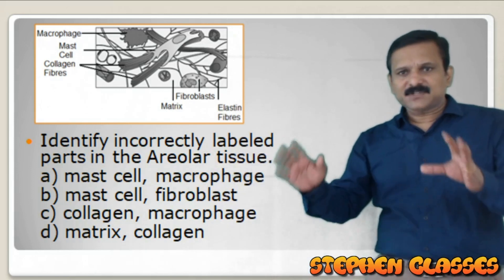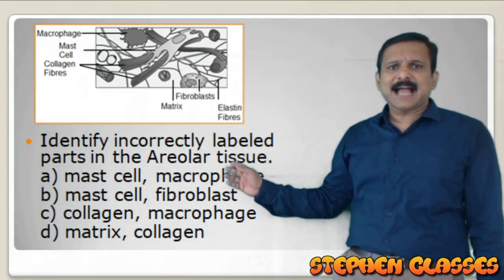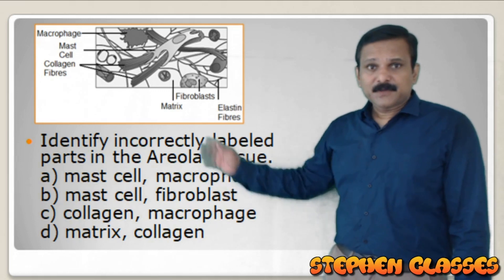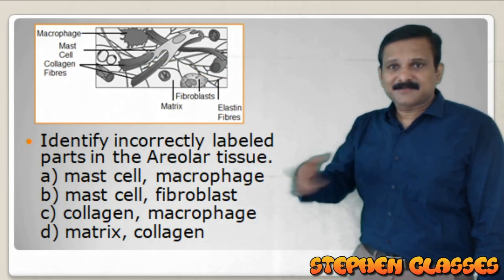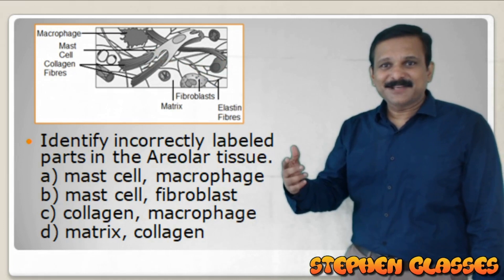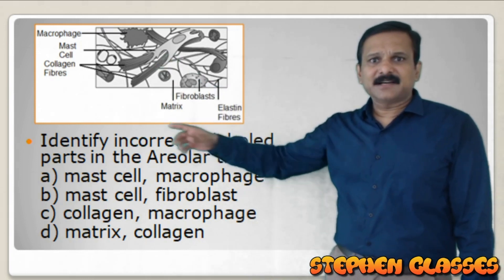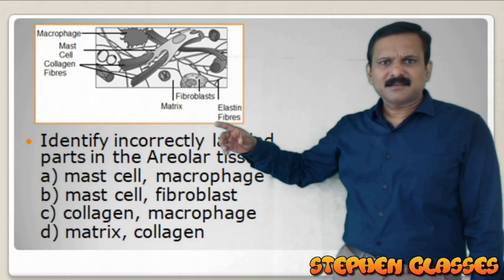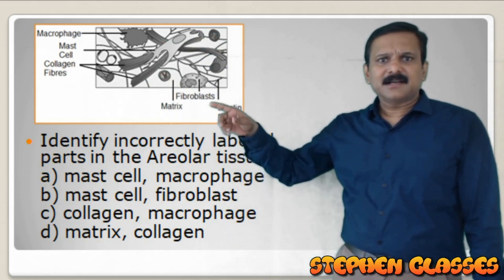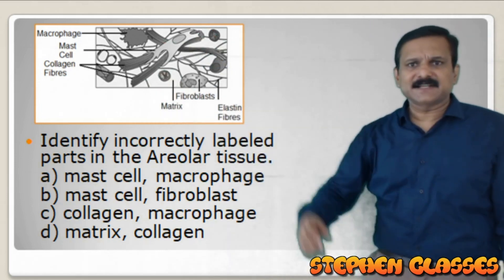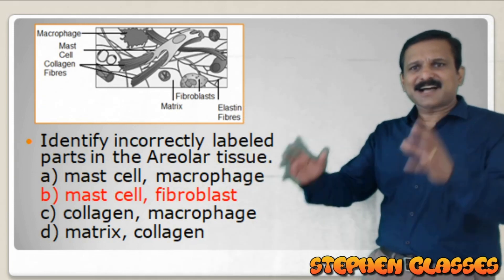The next question asks to identify the incorrectly labeled parts in an areolar tissue diagram. After analysis, mast cell and fibroblast are the two parts that are incorrectly labeled. These kinds of questions require you to identify incorrect labeling - sometimes they will ask for correct labeling and sometimes incorrect labeling.